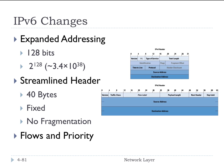Let me try to bring it into perspective. For the 6.5 billion people alive today, each one of those people could have 5 times 10 to the 28th IP addresses. IPv6 can address more than 1,000 devices for every atom on the Earth's surface. So I think we have enough this time.